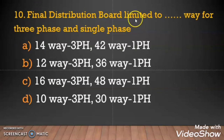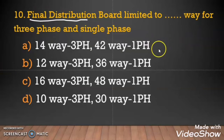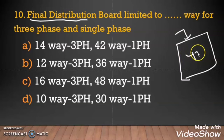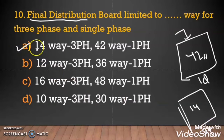Question 10: The final distribution board is limited to how many ways for 3-phase and single phase? As per ADDC regulation, 42 single phase circuits are allowed from one single phase final distribution board, and 14 three phase circuits are allowed from a 3-phase final distribution board. So the correct answer is 14 ways for 3-phase and 42 ways for single phase final distribution board.